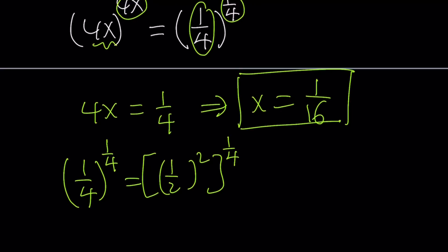If I write the 1 fourth as 1 half squared, and then multiply the exponents, I get 1 half to the power 2 fourths, which is 1 half. Wow, that's really cool, isn't it? Look, what we got from something like a to the a, we got something else like b to the b.